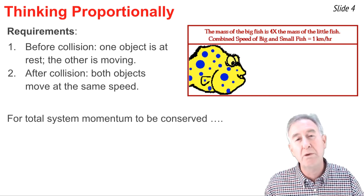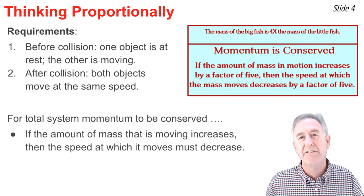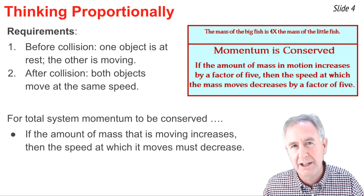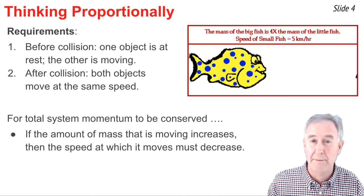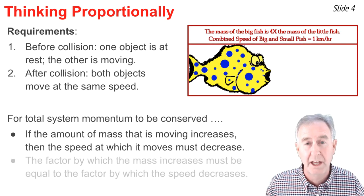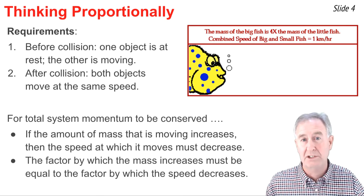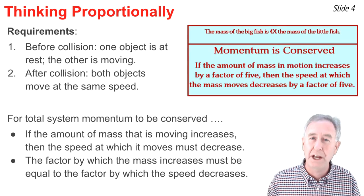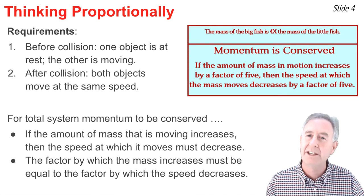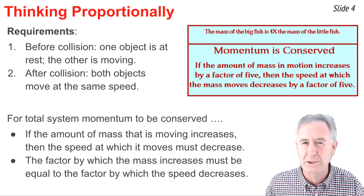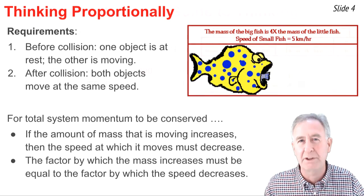In order for momentum to be conserved, if the amount of mass is increased, then the speed at which that mass is moving must be decreased. The ratio by which the mass is increased is equal to the ratio by which the speed is decreased. We'll learn how to use this principle through several examples.